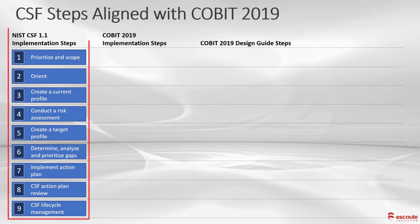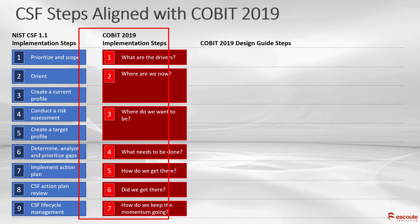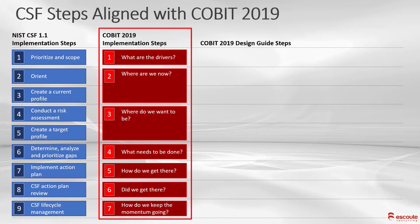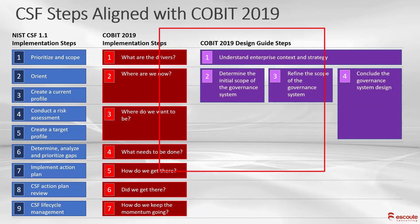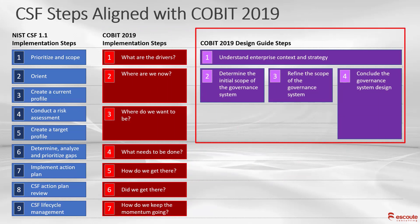On the left-hand side we see the NIST CSF 1.1 steps — there are nine steps here. It starts with prioritizing scope and goes all the way down to CSF lifecycle management. In COBIT 2019, as we saw earlier, there are seven steps. It starts with one of the drivers, all the way down to how do we keep the momentum going. This was that wheel that we saw in a previous module.